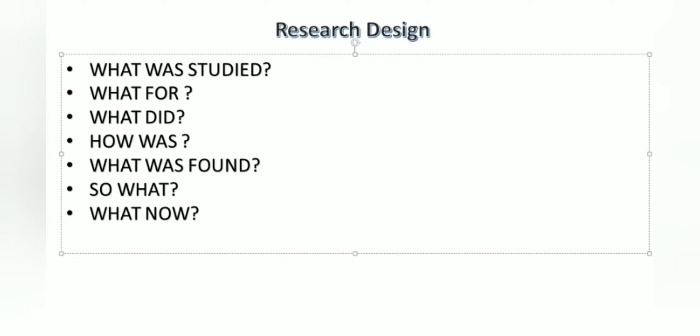Then the second question, what for, means why. Why you have taken those objectives, why you are doing this research. So you have to clearly explain the justification of your study. What did includes what all the research has taken place by prior literatures, so what did includes the literature review.